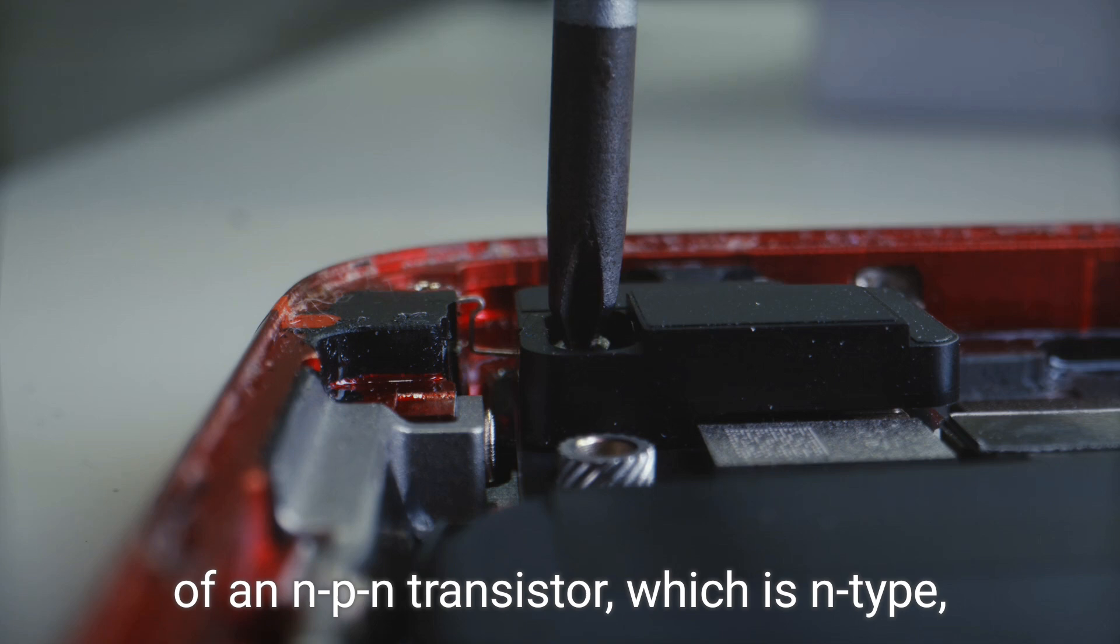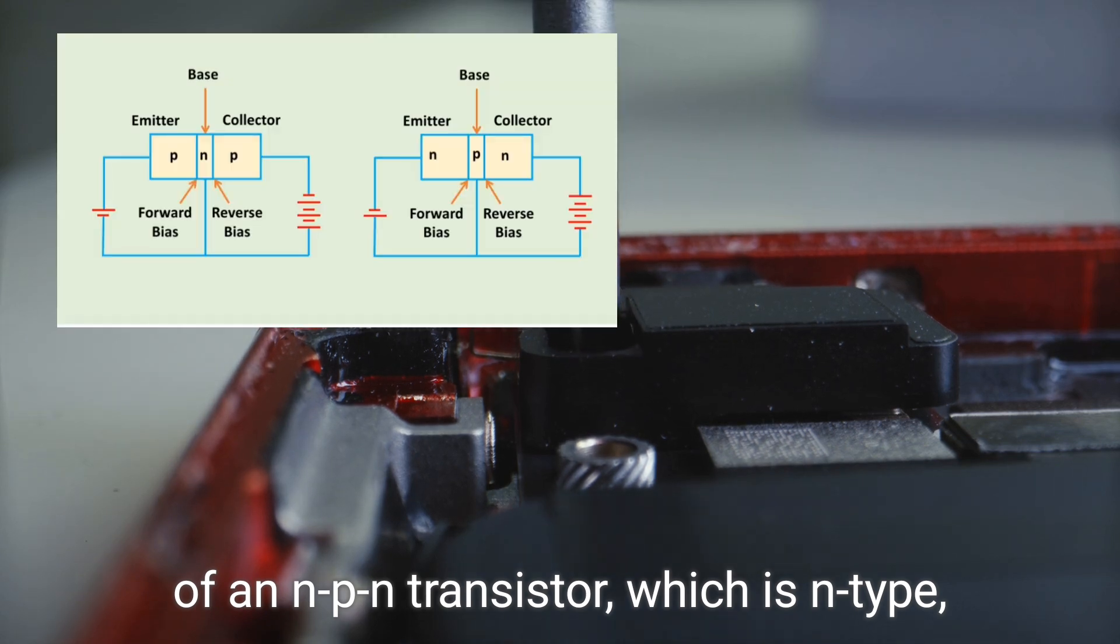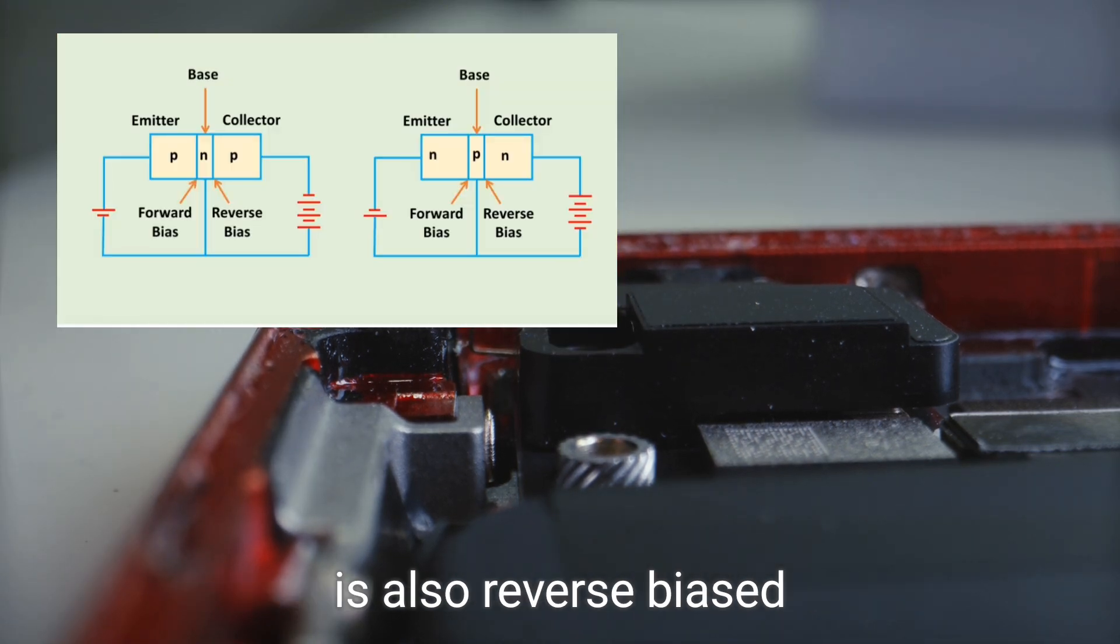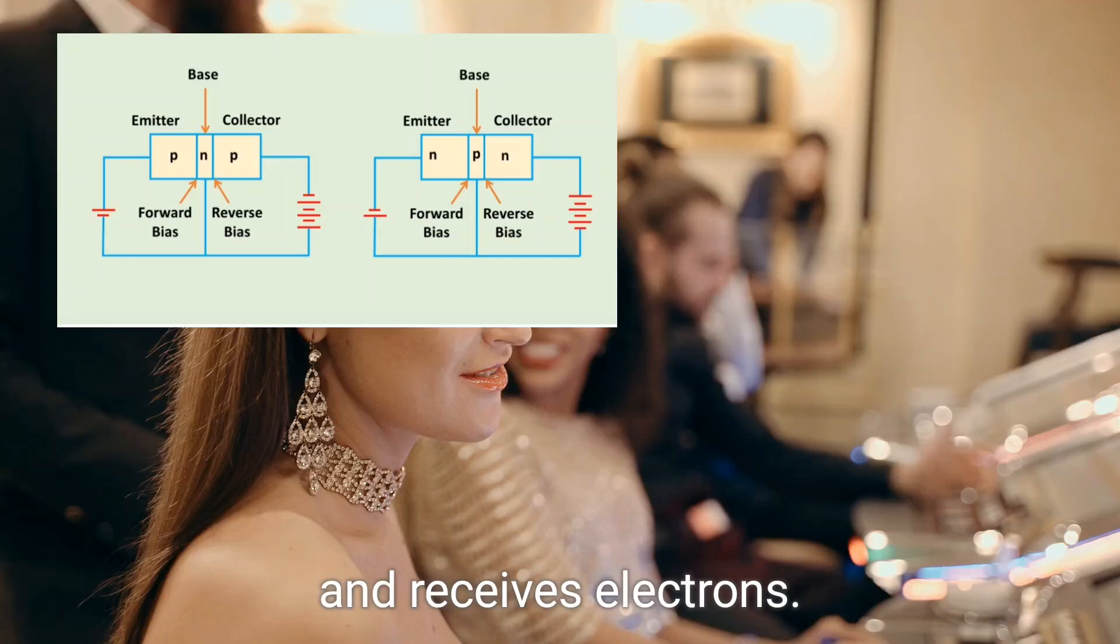Conversely, the collector of an NPN transistor, which is N-type, is also reverse biased and receives electrons.